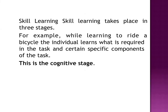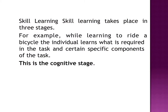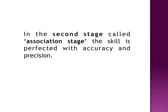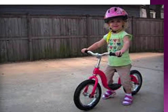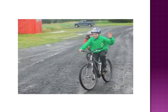Number one: skill learning. Skill learning takes place in three stages. For example, while learning to ride a bicycle, the individual learns what is required in the task and certain specific components of the task. This is the cognitive stage. In the second stage, called the association stage, the skill is perfected with accuracy and precision. Finally, the individual need not even think about the various aspects of the task to be performed. The skill becomes automatic.